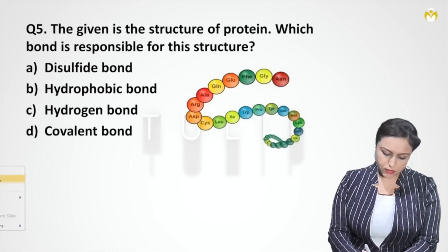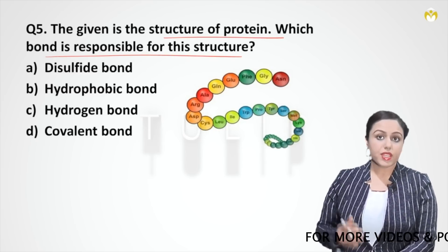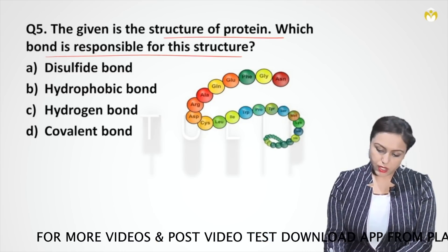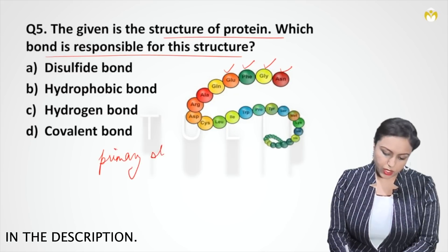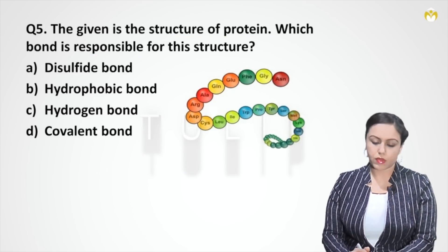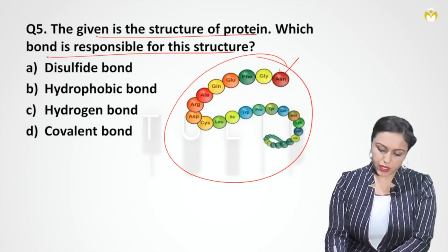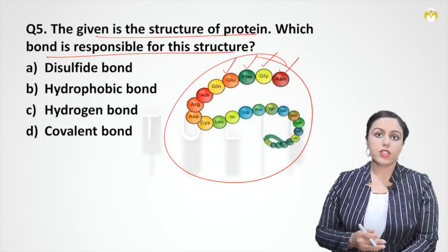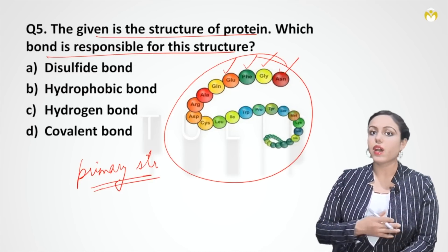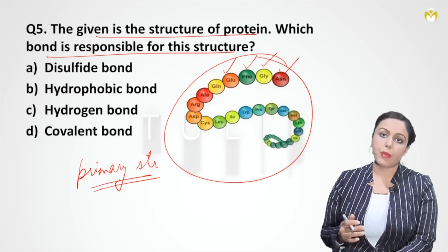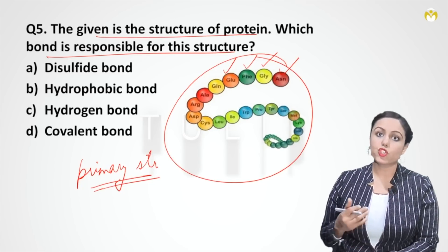Question five: the given is the structure of a protein — which bond is responsible for the structure? The amino acid sequence shown includes aspartate, glycine, phenylalanine, glutamate, and others. The sequence of amino acids is the primary structure of protein. In the primary structure, amino acids are attached to each other with peptide bonds, also known as amide bonds — amide bond is the general name, and when present in protein it is called peptide bond.